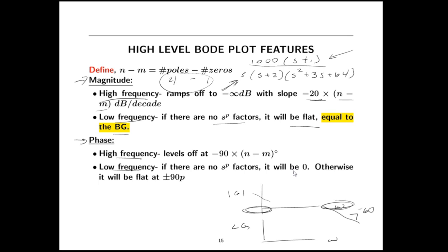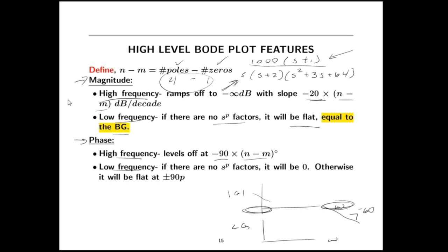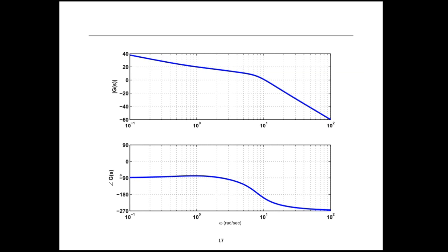For the phase plot sanity checks: at high frequency it levels off at negative 90 times (N minus M) degrees, which is negative 270 degrees for this example — and checking the MATLAB plot confirms exactly that. At low frequency, if there are no poles or zeros at the origin the phase will be zero. If there are poles or zeros at the origin, the low-frequency phase is flat at plus or minus 90 degrees times their multiplicity. Here we have one pole at the origin, so it's flat at negative 90 degrees at low frequency — and sure enough, the plot confirms negative 90 degrees.